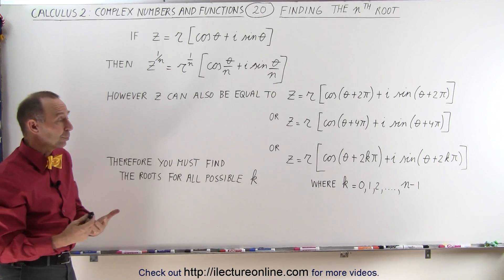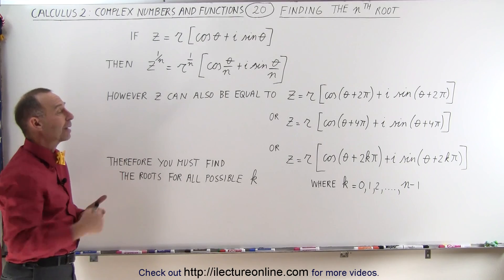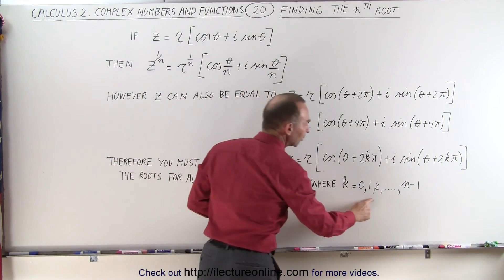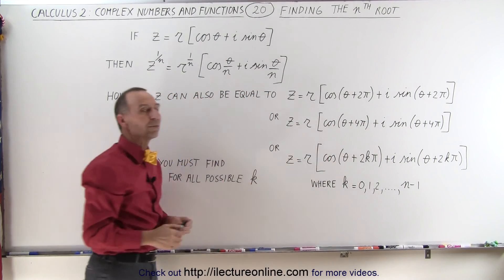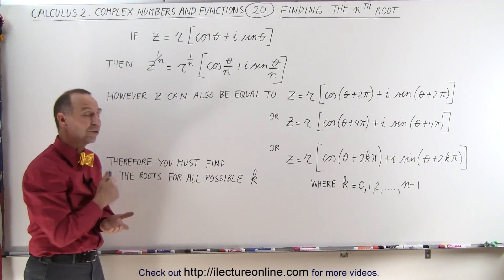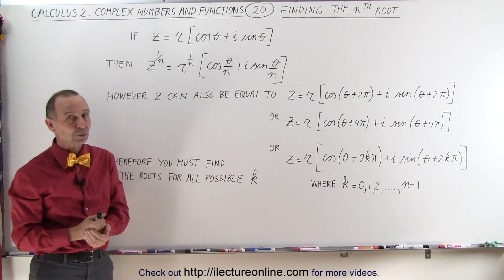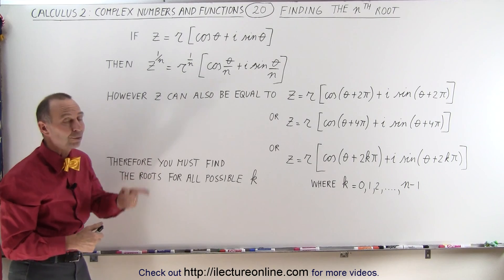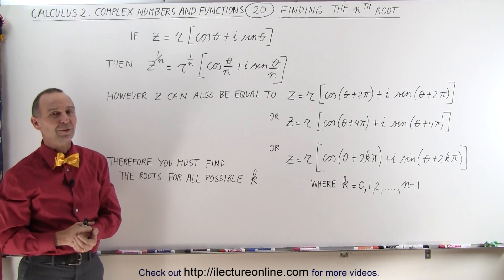So we need to find the roots for every one of those possible values of k, and finding the nth root can actually be quite a task. You'll have to do it many times over again until you've exhausted all the possible values for k and found the root in each specific case. On the next video, we're going to show you how to do that. Be careful when looking for the nth root of a complex number in polar form — you need to cover every possible combination.